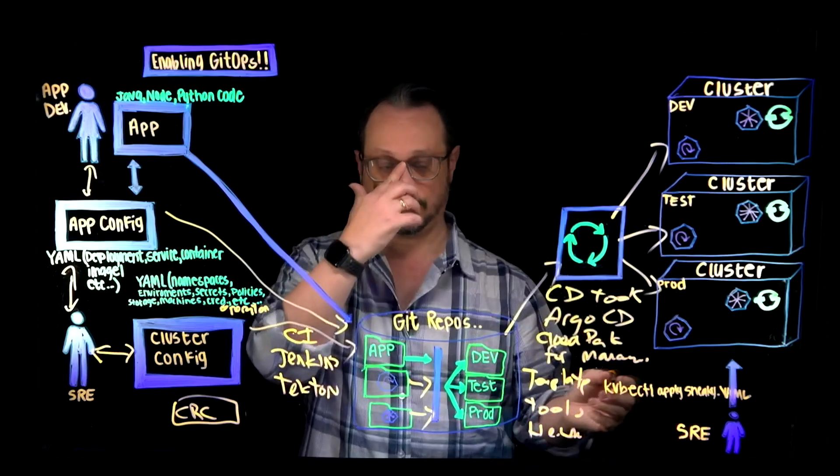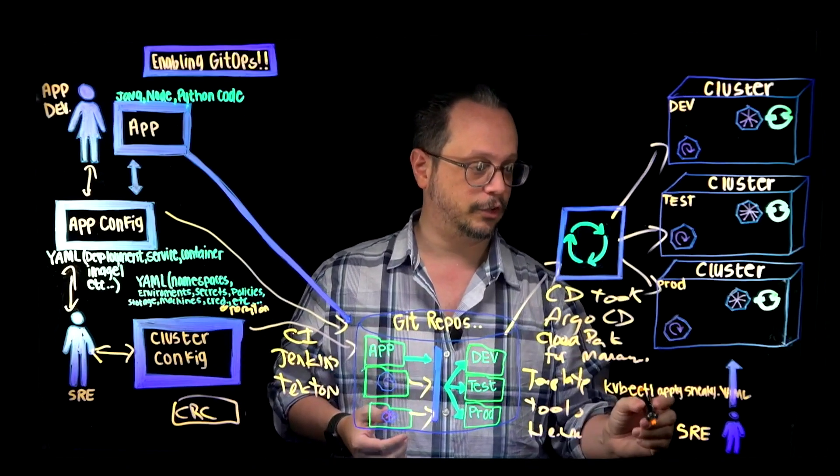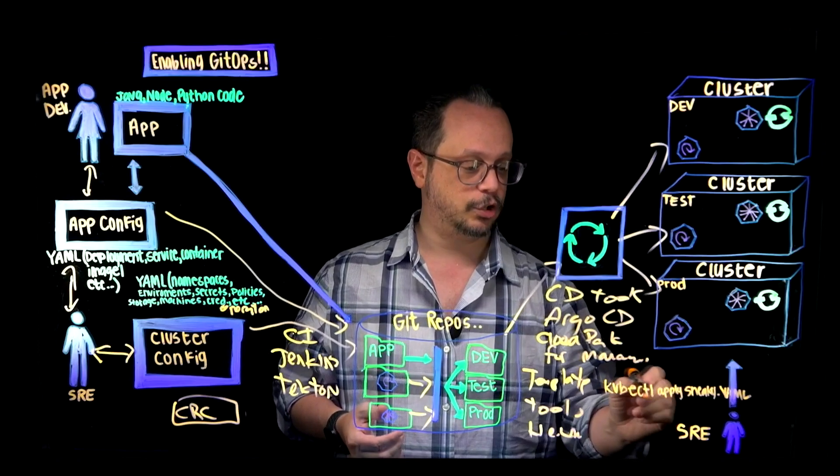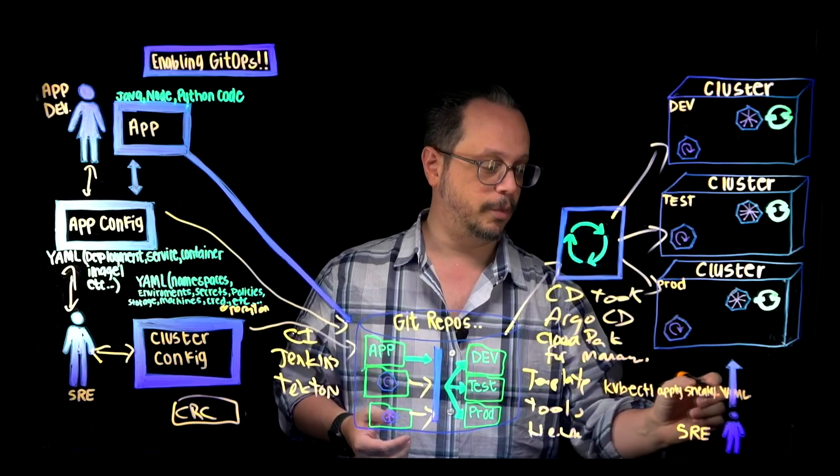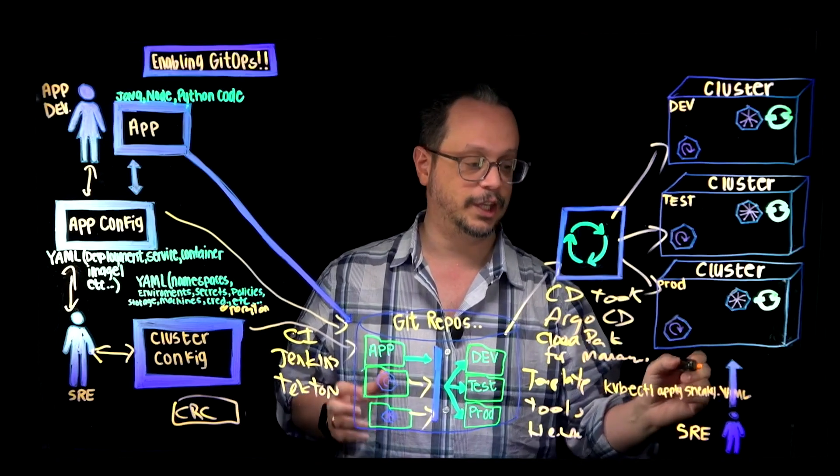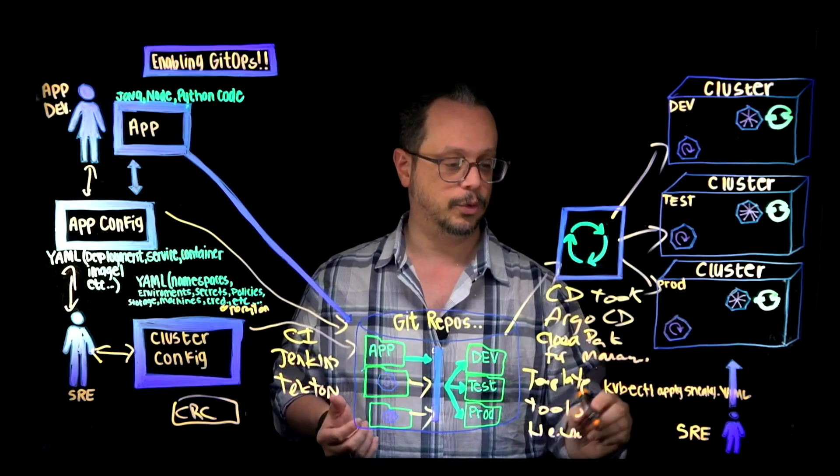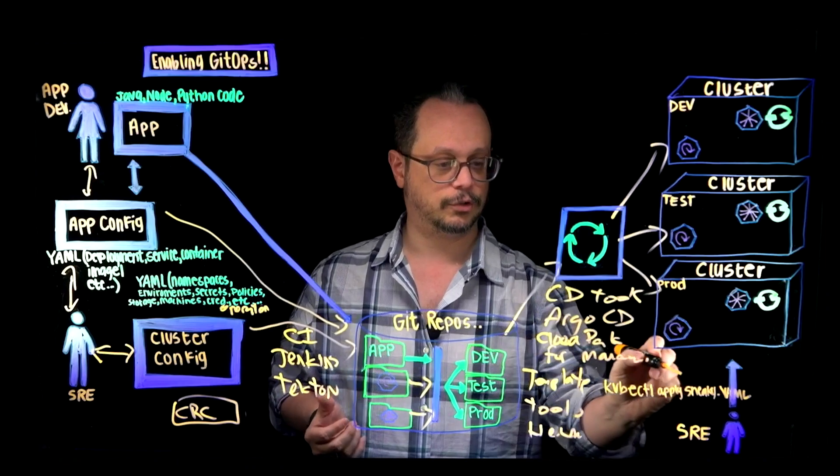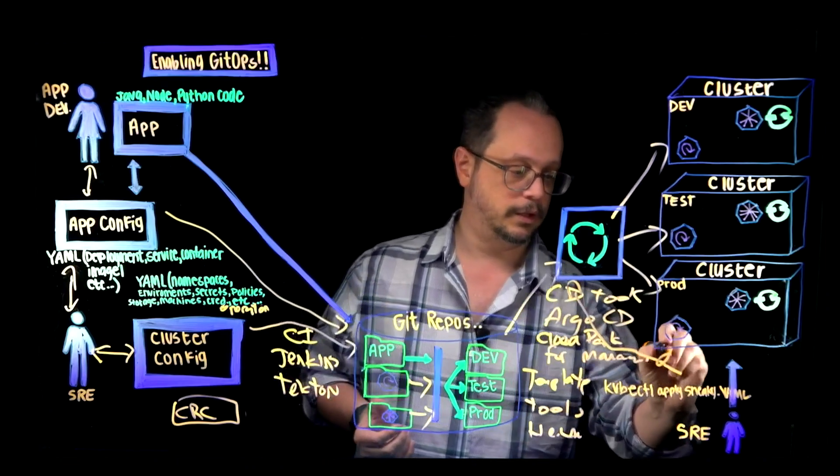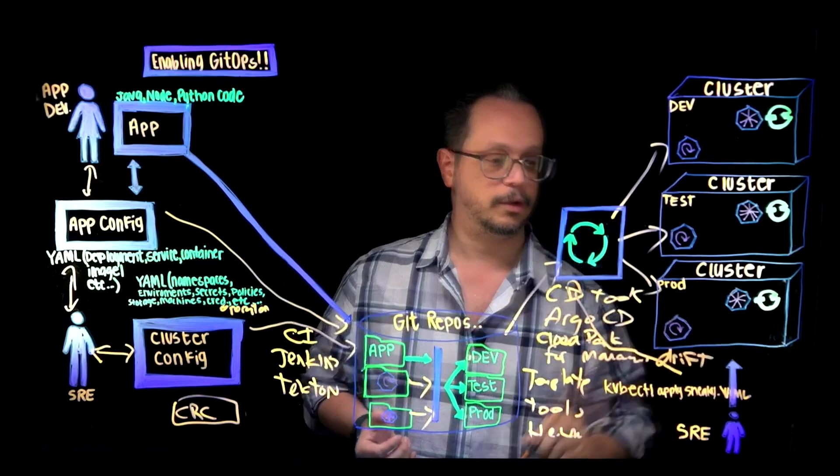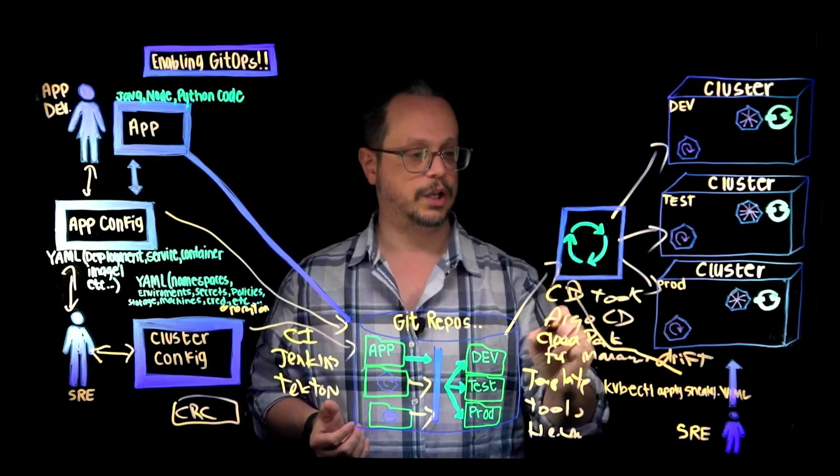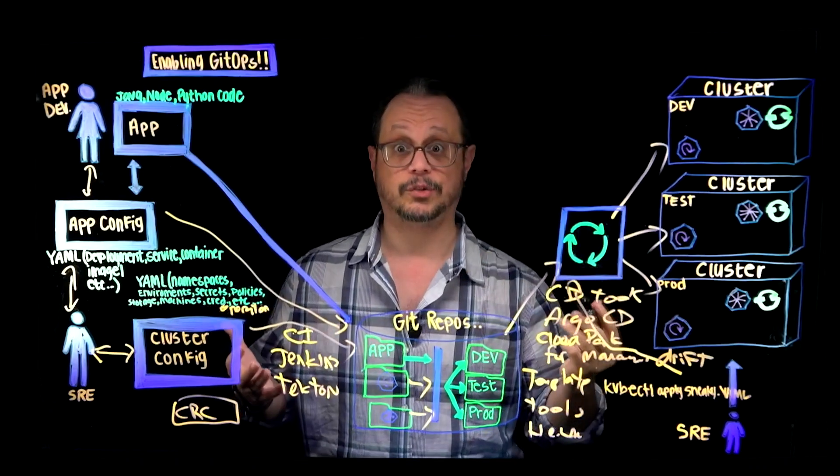But what do we do if there's a site reliability engineer that gets access to an environment and actually issues kubectl commands, kubectl apply sneaky YAML, and puts the cluster out of state? We want to be able to detect drift, and this is a key concept, drift. We're going to be able to detect drift and do some actions with that.